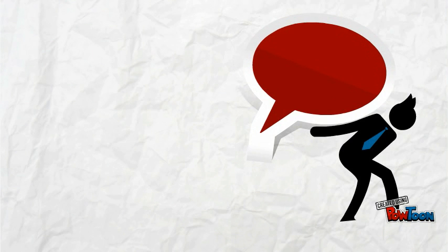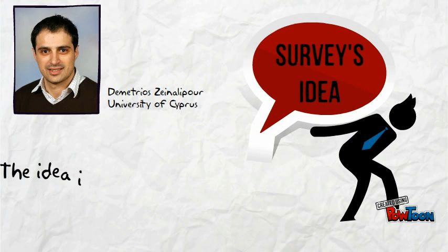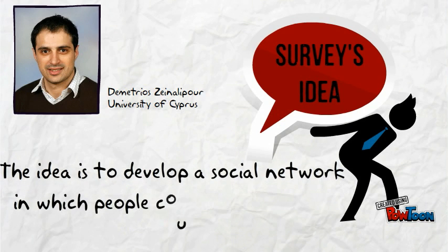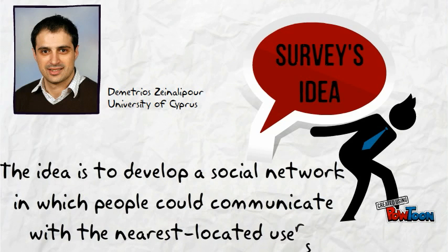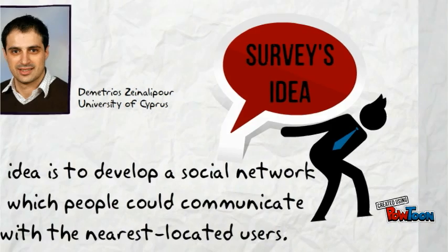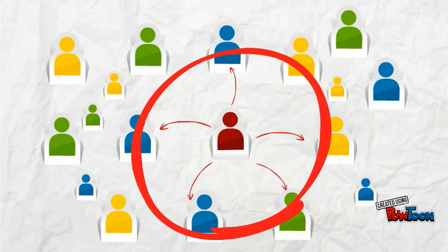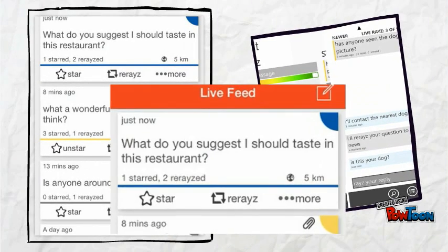The research center of the University of Cyprus, specifically the laboratory of Mr. Demetrius Sinalova, was funded by Microsoft and Nokia in Finland to develop an innovative application which realizes the KNN algorithm. The general idea was to develop a social network where people would be able to interact with the closest people around them. For instance, if a person is in need, he can publish the problem and instantly receive help and advice from the nearest users.